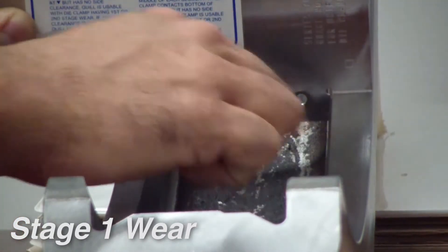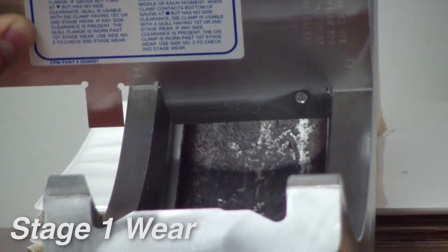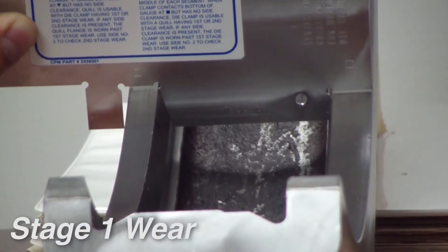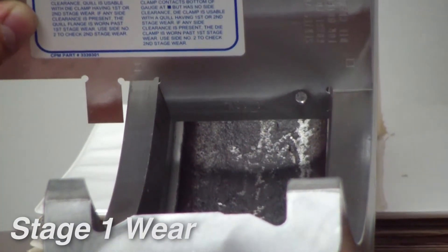If we have Stage 1 wear with no side-to-side movement of the gauge, then we can use this clamp with a quill flange that also has Stage 1 or Stage 2 wear.